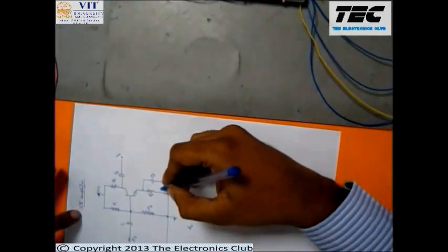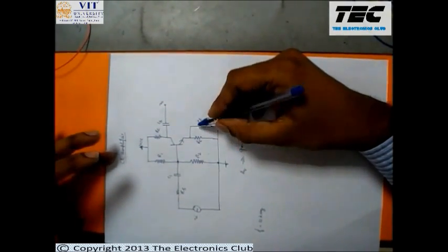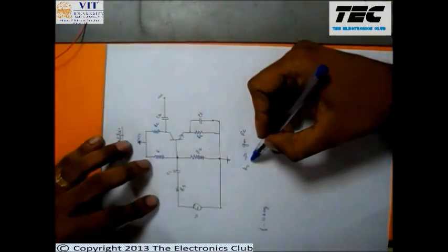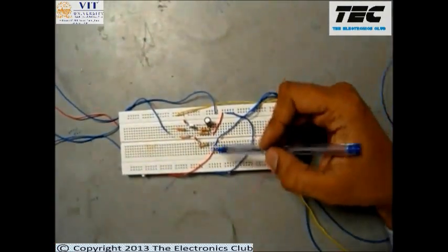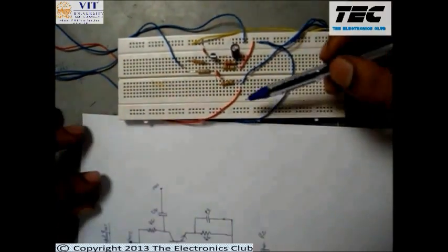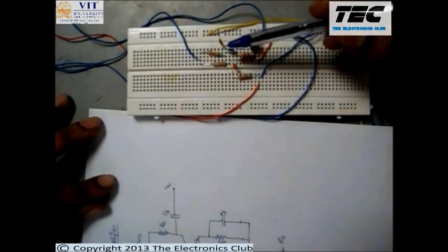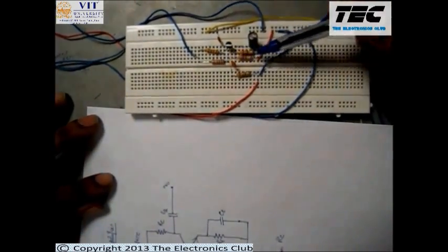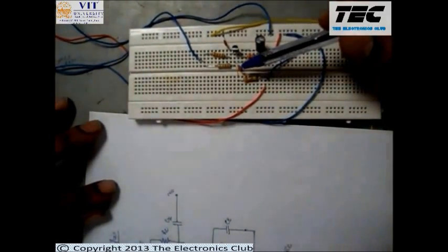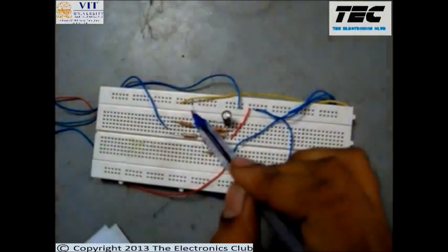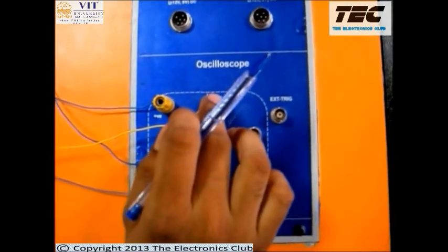The CE amplifier shown previously is a common emitter amplifier with an emitter bypass capacitance. We know that the gain is approximately GM into RC. We have the voltage divider bias established by R1 and R2, and the BJT. This is the collector resistance, this is the emitter resistance, the emitter bypass capacitance, the output coupling capacitor, the input coupling capacitor, and this is the source resistance RS. From here we take the output which is fed to the oscilloscope second channel.